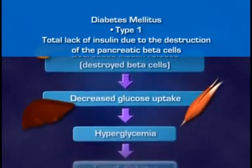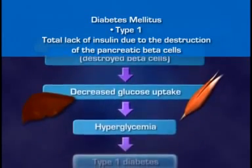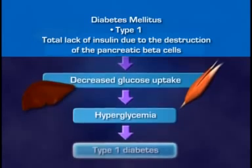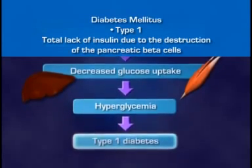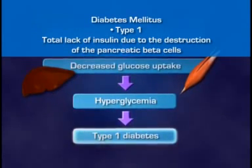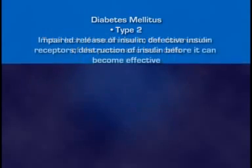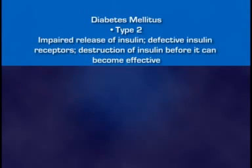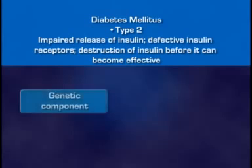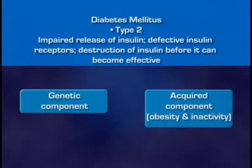Diagnosis is usually in childhood because it results in virtually absolute insulin deficiency. Type 1 diabetes is treated with insulin injections. Type 2 diabetes is far more common than type 1. As with type 1, the pathophysiology of type 2 diabetes involves both genetic and acquired factors.